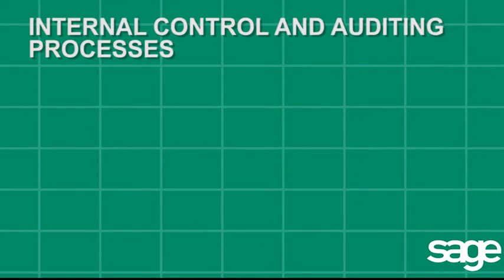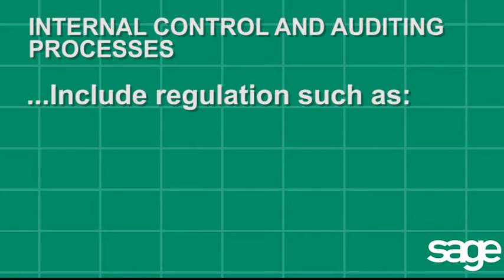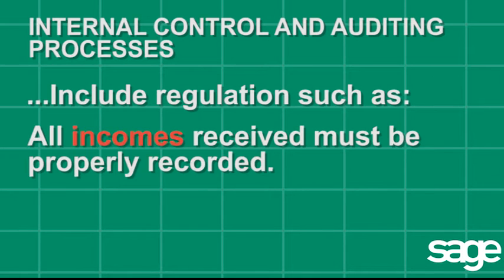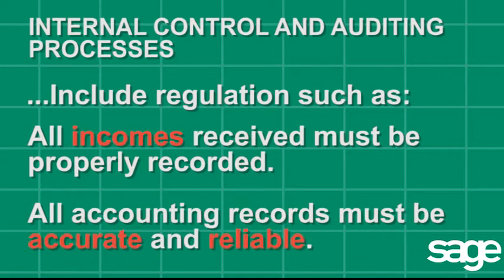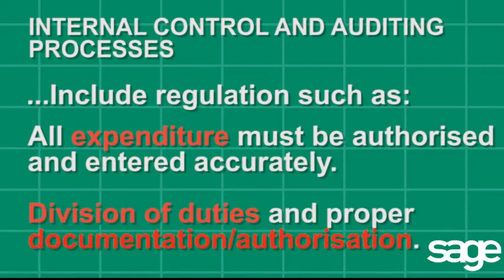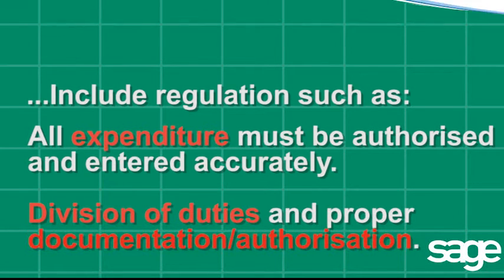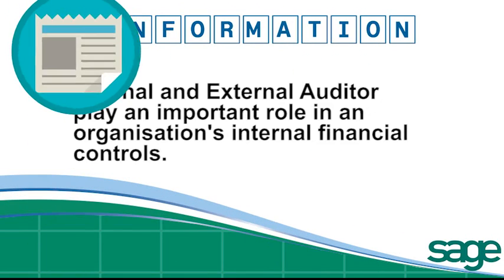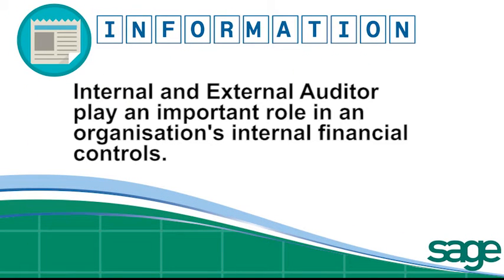Internal control processes include regulations such as: all incomes received must be properly recorded; all accounting records must be accurate and reliable; all expenditure must be authorised and entered accurately; division of duties; and proper documentation and authorisation.